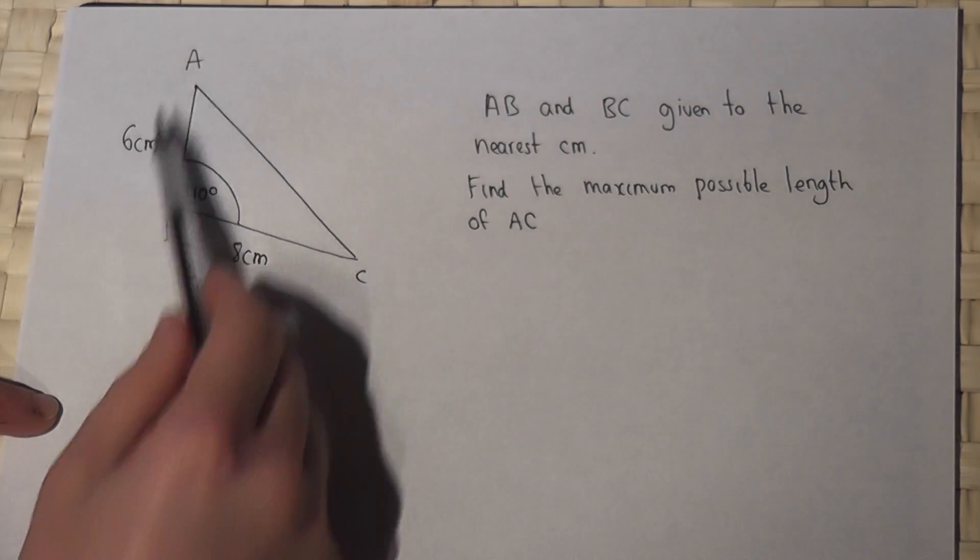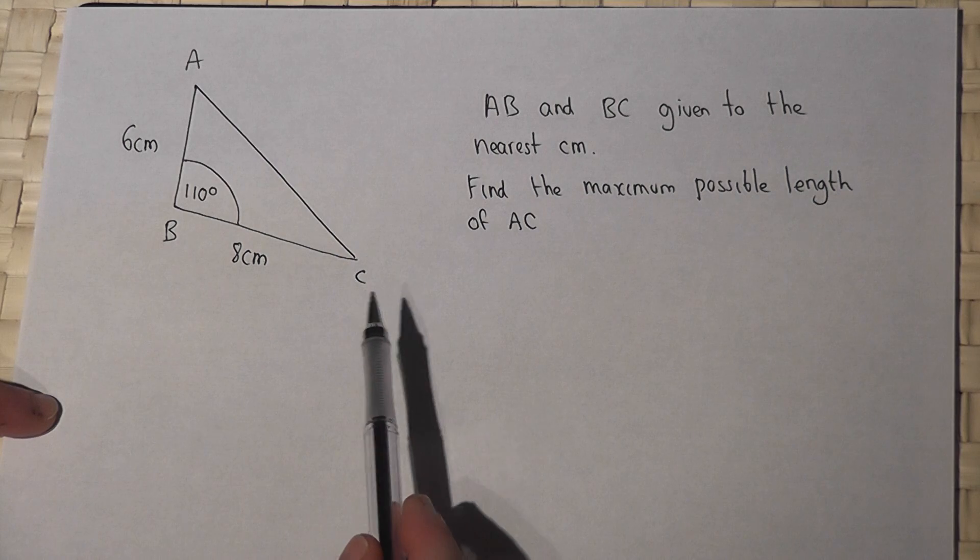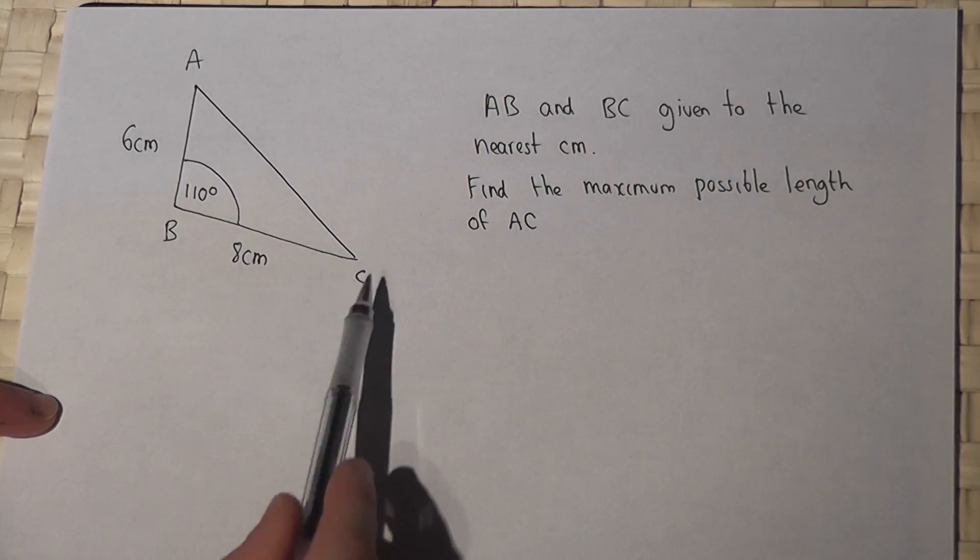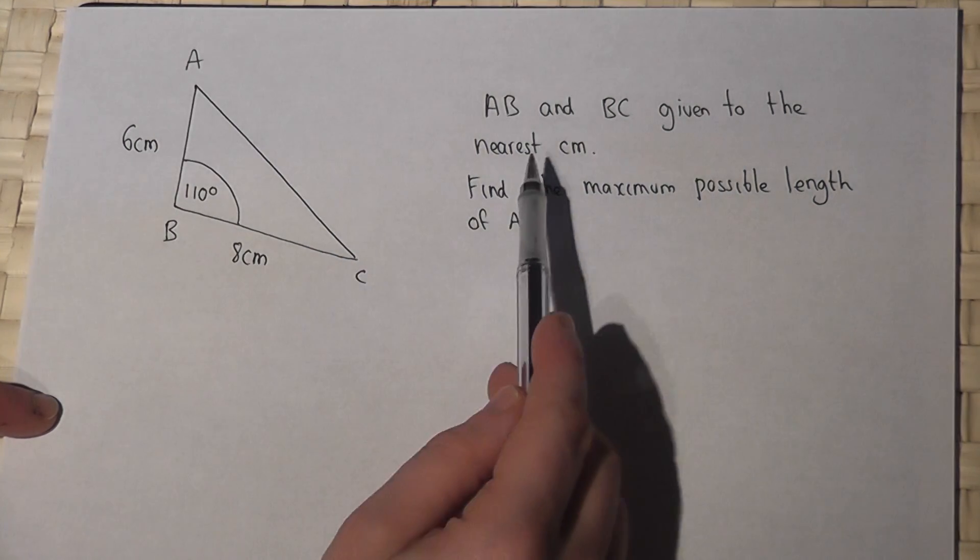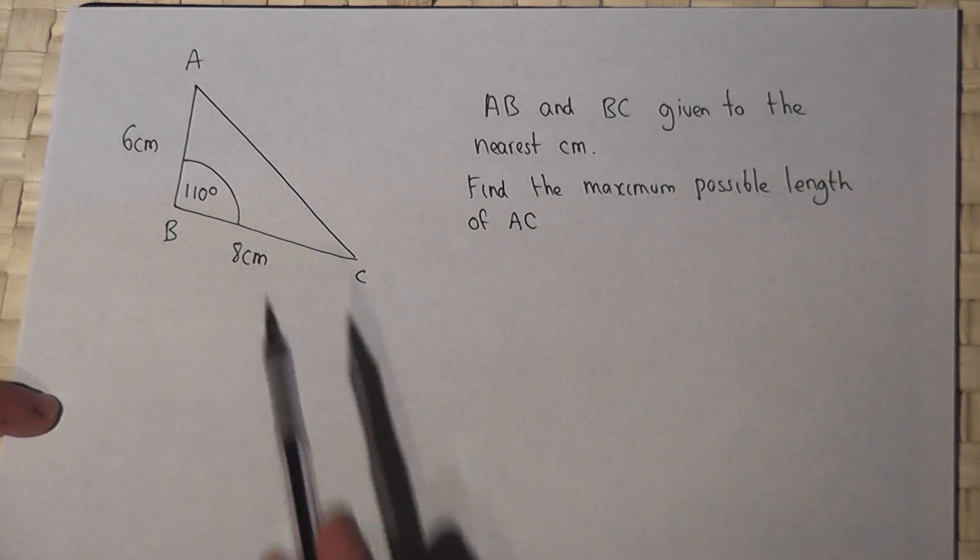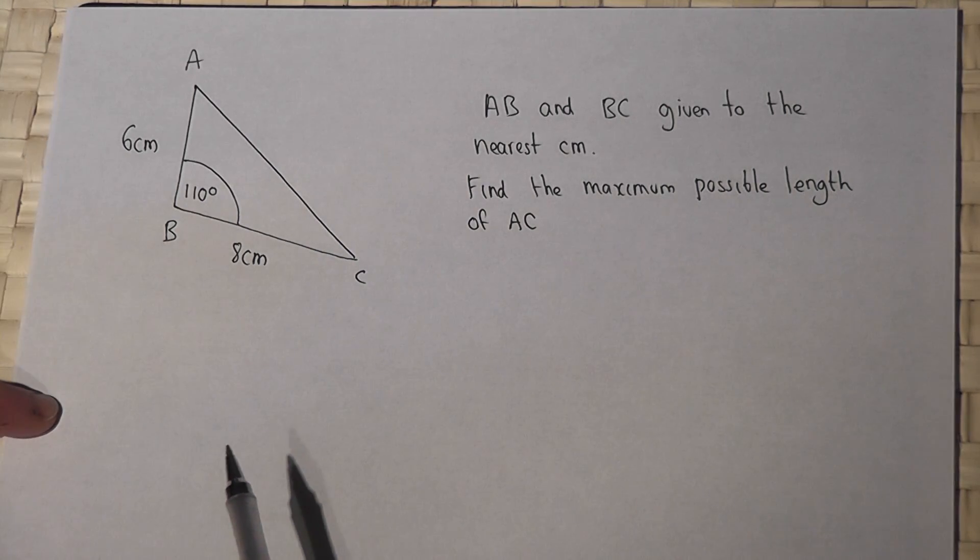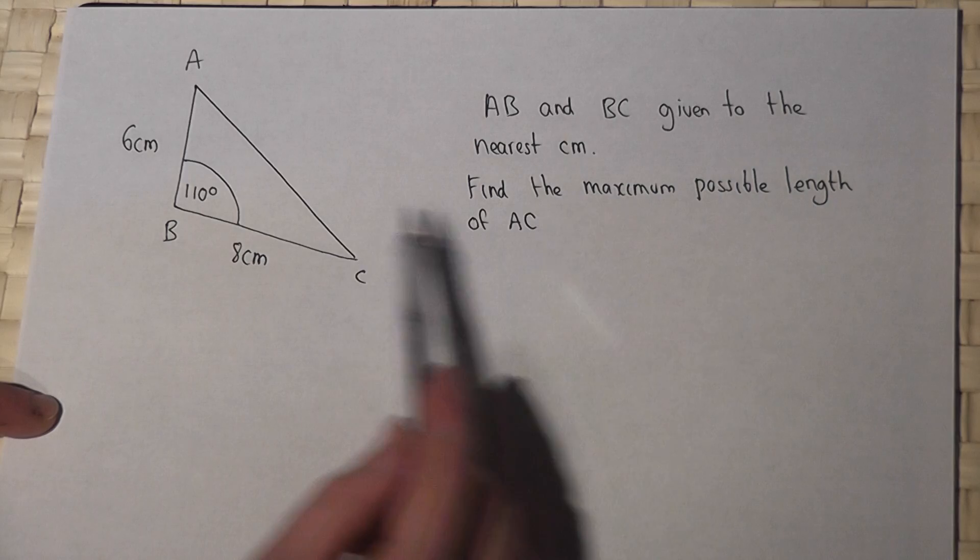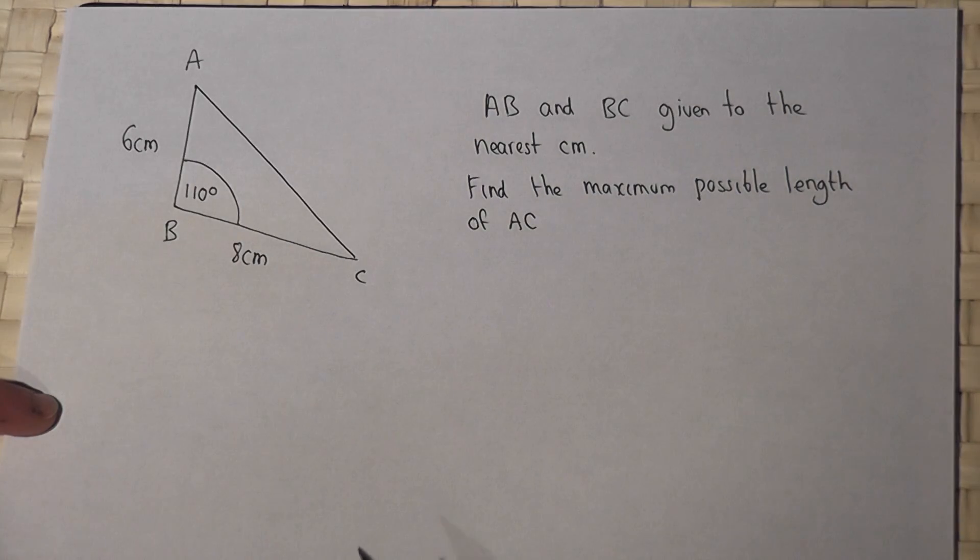In this problem we're given a triangle and we're told that lengths AB and BC are given to the nearest centimeter—they've been rounded—and we're asked to find the maximum possible length that AC could equal.